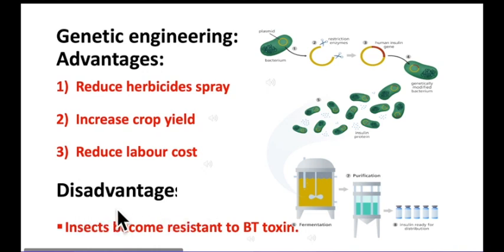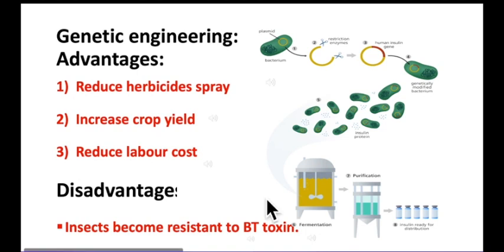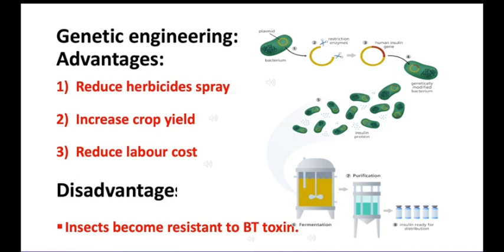A disadvantage of genetic engineering is that insects can become resistant to BT toxin. Some insect pests are evolving to become resistant to BT toxin, similar to how resistance to ordinary pesticides has evolved on many occasions. A possible way to avoid this problem is to plant only certain areas with BT-containing crops and grow non-BT crops nearby, so insect pests can feed on the non-BT crops and will not develop resistance to the BT crops.